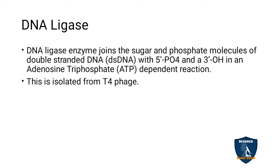DNA ligase enzyme joins the sugar and phosphate molecules of double-stranded DNA, with 5'-phosphate and 3'-OH, in an adenosine triphosphate (ATP) dependent reaction. When DNA ligase is applied to a vector DNA or a gene of interest DNA, both DNAs are joined at the sugar and phosphate molecules — specifically at the 5'-PO4 phosphate bond and 3'-OH group — with the help of ATP.